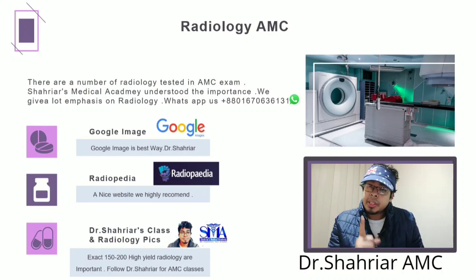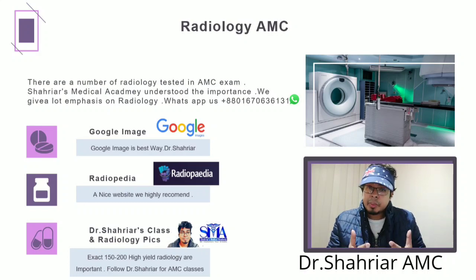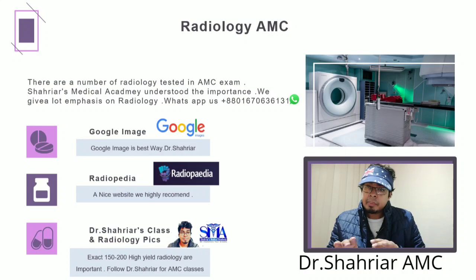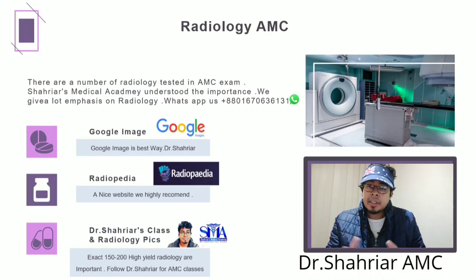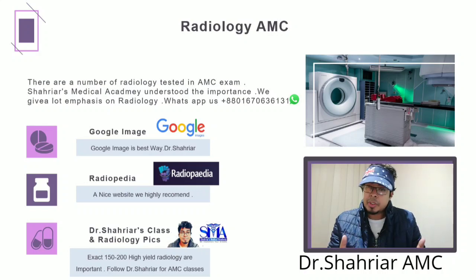The number one resource I use is Google Images. You just type anything — for example, barium esophageal carcinoma, barium achalasia, or pneumonia x-ray — and immediately there are like 10 to 12 images that come up. Those are some of the best ones you can choose from.